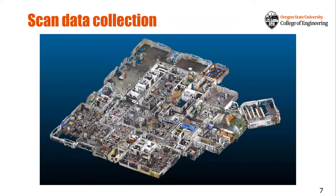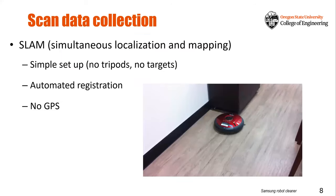Now let me talk about what's going on behind the scenes and some challenges we are currently trying to tackle. One challenging problem is scan data collection. Here is an example of scan data collected in a very large-scale indoor environment — it includes a lot of rooms, corridors, and objects. Traditional scanning systems can be challenging because after collecting the data, you need to register all scan data into a common coordinate system. There are algorithms and commercial software that help, but it still requires some manual interaction, as well as site setup like installing tripods and targets.